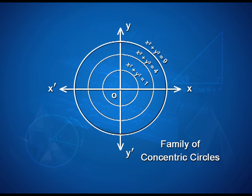Here you can see in the figure the family of concentric circles. The inner circle has equation x² + y² = 1, the next is x² + y² = 4, and the outer circle has equation x² + y² = 9.